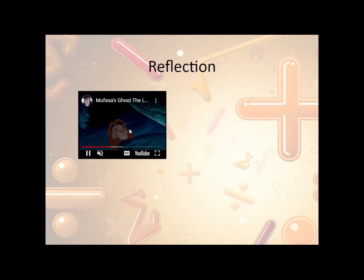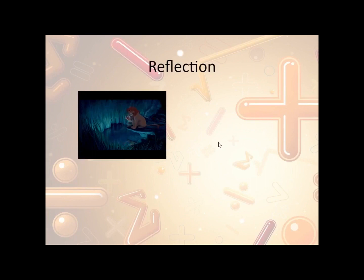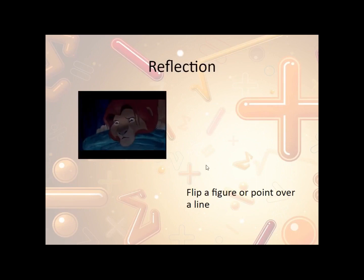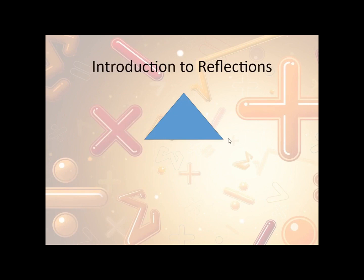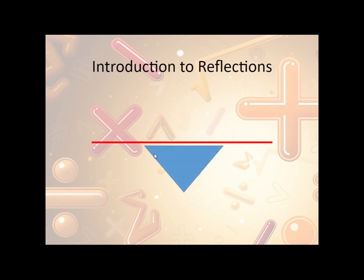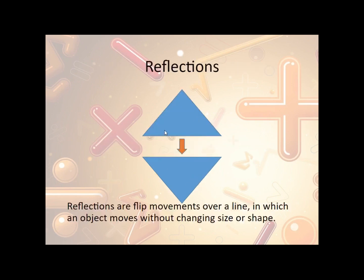Here's a little video of Simba looking at his reflection in the water — that's what a reflection is. Reflections occur when we flip a figure over a point or a line. For instance, we have a triangle here; if we flip it over this line, it's going to flip downward and look like this. Reflections over a line could be up and down or side to side. They do not change size or shape, but they do change direction — it will flip over and look inverted, but the size of the triangle does not change.